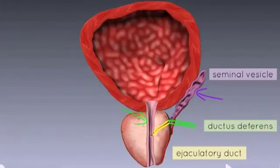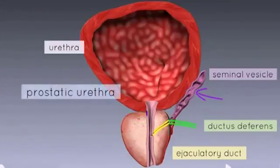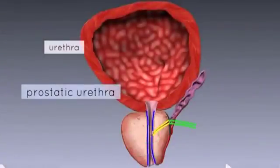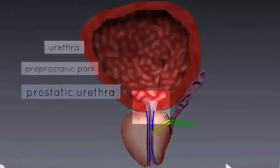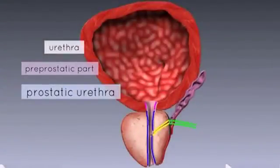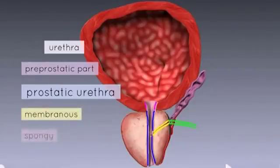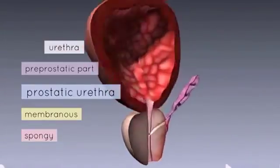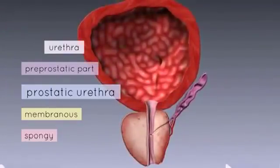Another duct runs through the prostate gland — this is the urethra. Because it runs through the prostate, it's called the prostatic part of the urethra. The ejaculatory duct empties into this prostatic part of the urethra. The urethra has four parts: the pre-prostatic part above the prostate, the prostatic part, the membranous part, and the spongy part. Note that this is a cross-section, so only one seminal vesicle and one ejaculatory duct are shown — there are two ejaculatory ducts, one on either side.